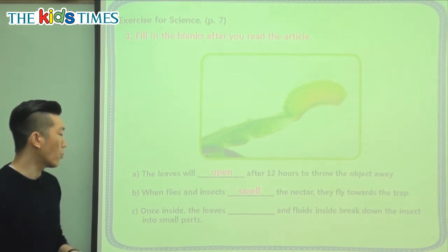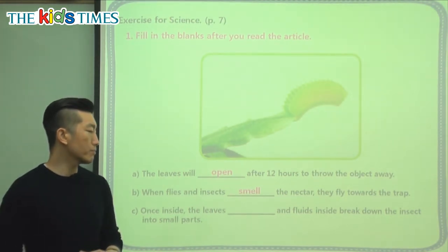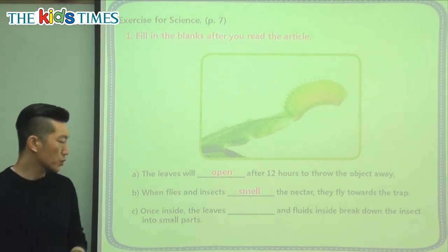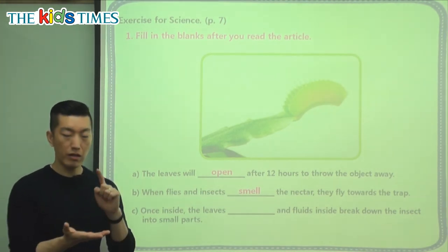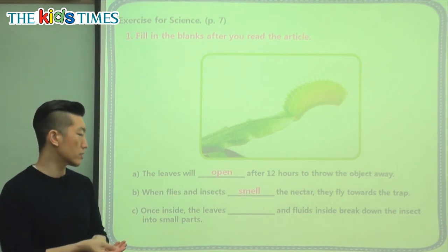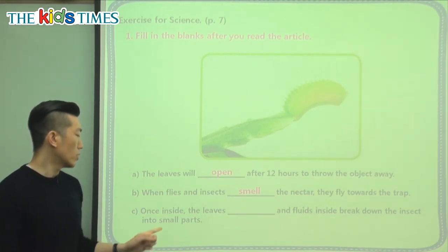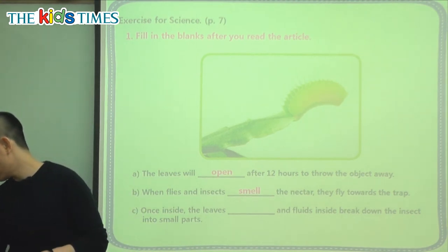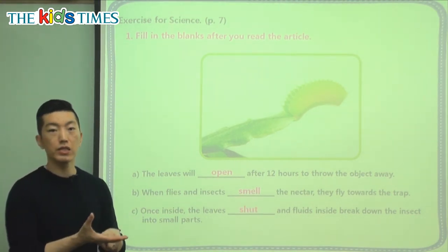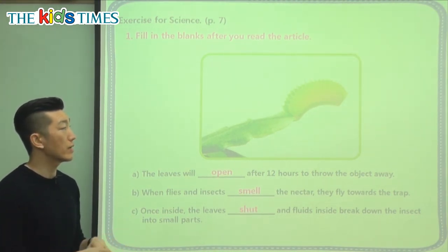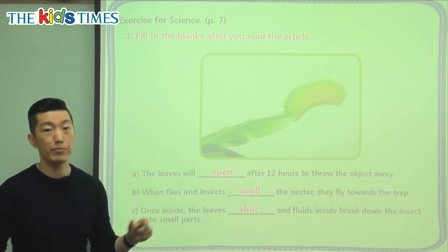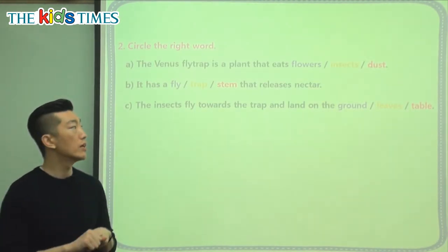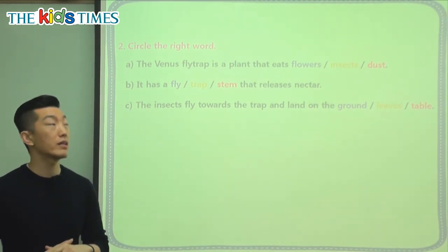The last question: once inside, the leaves blank and fluids inside break down the insect into small parts. When a bug comes inside the leaf and it shuts, what happens? The leaves shut — they close — and that's the trap. That's where it gets its name, the Venus flytrap. It traps not only flies but many other insects.